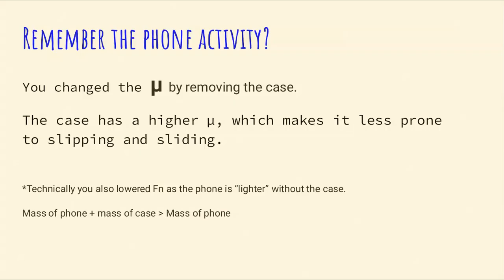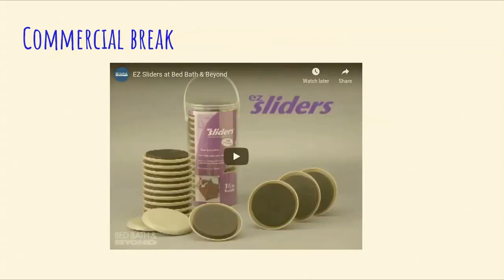Going back to the phone activity: when you removed the case, you changed the coefficient of friction. The table surface didn't change, but the phone's contact surface changed from case material to the phone itself. The case has a higher μ, making it less prone to slipping — that's why you buy it. Also, the phone without its case is lighter, so removing the case also lowers the normal force F_N, since the combined mass of phone plus case is greater than the phone alone.